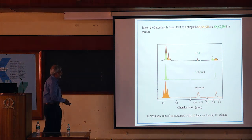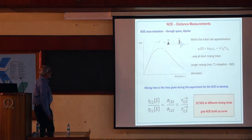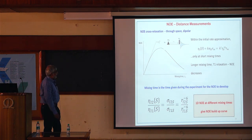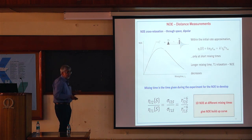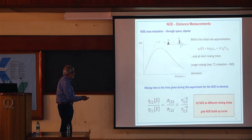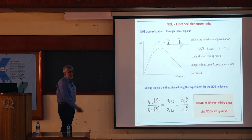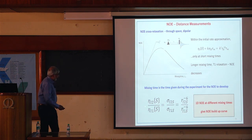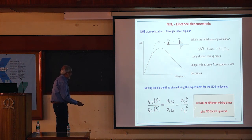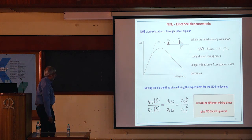Once we have this mixture, we perform NOE distance measurements — nuclear Overhauser effect measurements. The nuclear Overhauser effect is a dipolar interaction that goes as r to the power of six, and the NOE buildup goes as the sixth power of the distance. Taking the ratio of two NOE intensities, we can get the ratio of the corresponding distances.